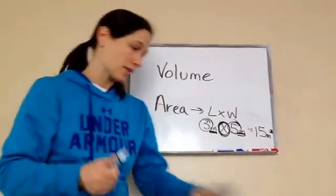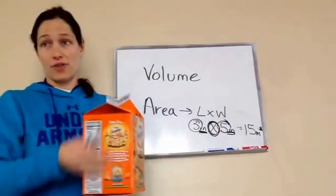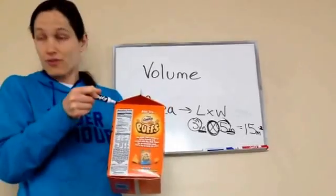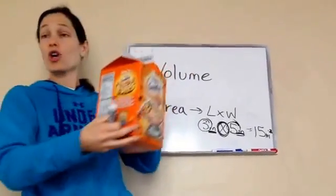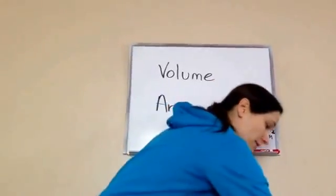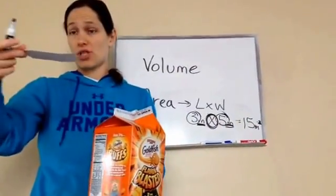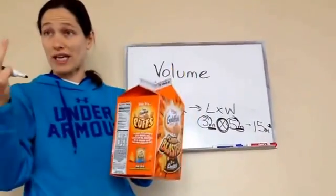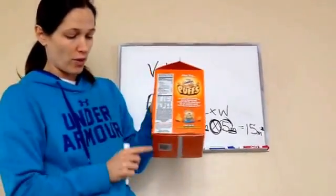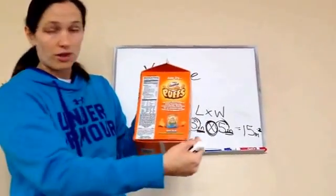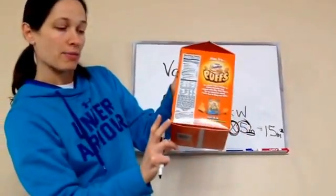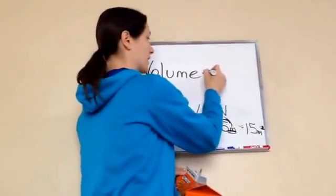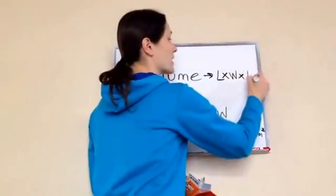Volume is not just length times width — volume also includes height. So I have a length, I have a width, but I also have a height. When you're working with volume, it's a 3D image. This note card is a 2D image because it has two dimensions: length and width. A 3D object has three dimensions — length, width, and height. The volume formula is: volume equals length times width times height.